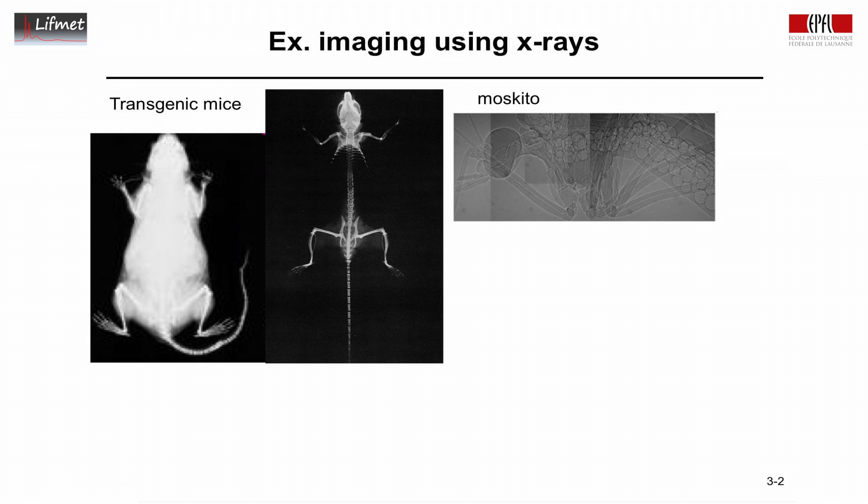Insects are also a good target for X-ray imaging. There's excellent contrast with the air even though there's not much mass. Here you can see a mosquito, here is the head, the antennas and the legs.